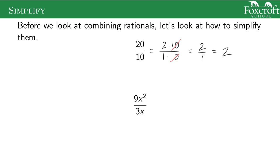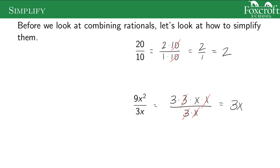9x squared over 3x: 9 is 3 times 3, x squared is x times x, and 3x is 3 times x. You can cancel out things that are common on the top and bottom. That gives me 3x. So we always want to try to cancel out things on the top and bottom — if there's the same thing on the top and the bottom, we want to cancel it out.